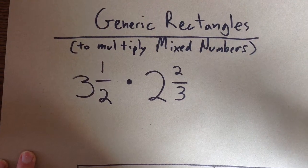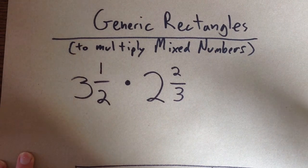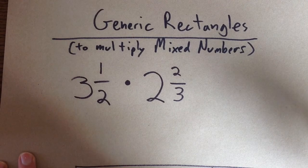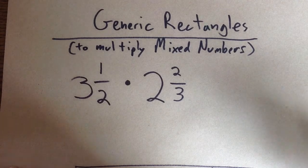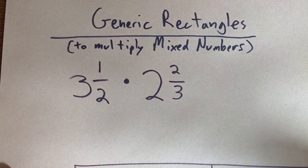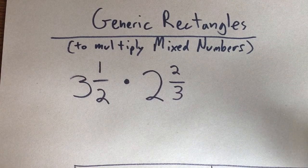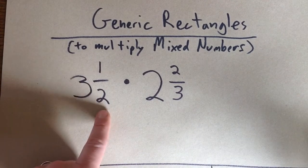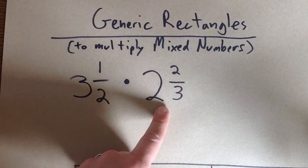If you're having trouble with generic rectangles, or don't know what a generic rectangle is, I could recommend my video on generic rectangles, which you'll find in the description of this video. Now we're going to use generic rectangles to multiply mixed numbers, in this case 3½ times 2⅔.